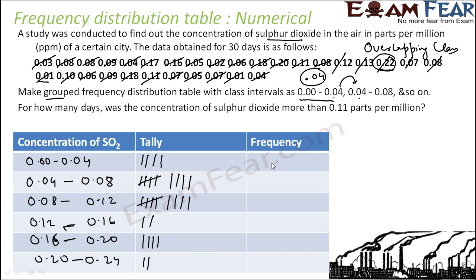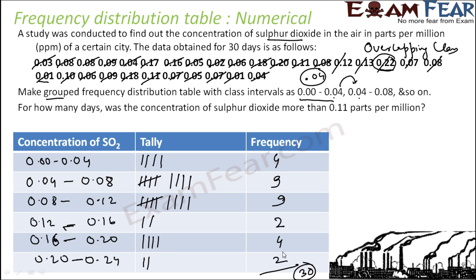Let's see. The first class has 4, 5 plus 4 is 9, 5 plus 4 is 9, this is 2, this is 4, and this is 2. Adding up: 4, 9, 13, 9, 22, 24, 28, and 30. Total is 30, which means we are good. So this is the grouped frequency distribution table for the concentration of sulfur dioxide in this particular area.